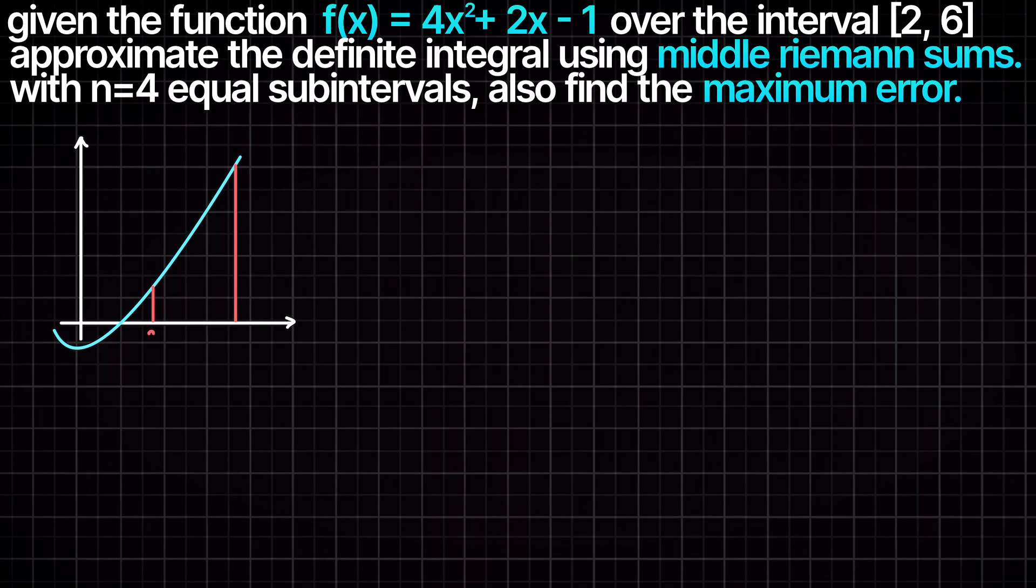The polynomial function will look something like this with our lower integration bound 2 and our upper integration bound 6, and we are trying to approximate the area under the curve within the boundaries.